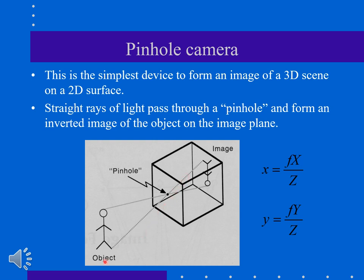Straight rays of light pass through the pinhole and form an inverted image of the object. The x and y - remember this is a three-dimensional object reflected as a two-dimensional object in the box.